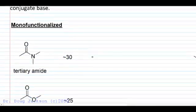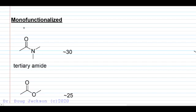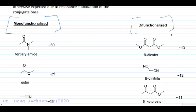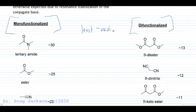All of these functional groups that we're going to look at have alpha carbons. On the left-hand side, we've got monofunctionalized functional groups — a single functional group that each have an alpha carbon. On the right-hand side, we've got two such functional groups with an alpha carbon in the middle. In both columns, the least acidic is at the top and the most acidic will be at the bottom of each column.